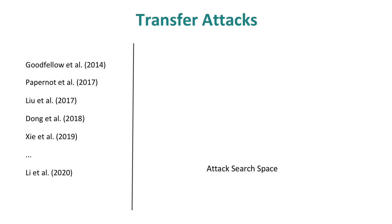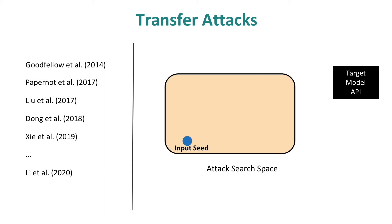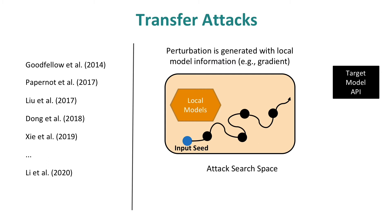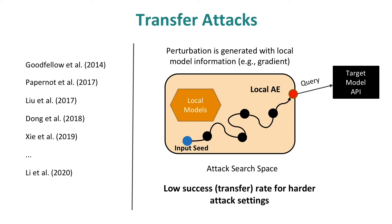The first existing black box attack is the transfer attack. In this attack, the goal is to add imperceptible changes to the input seed such that it can cause desired misclassification for the target model. The perturbations are generated using information from the local model, such as the gradient of local models, for which adversaries have complete access — so the attack on local models is a white box attack. This process produces a local adversarial example, and we query it to the target model. If it successfully fools the target model, we say it transfers. However, in harder attack settings, the transfer rate is usually very low.